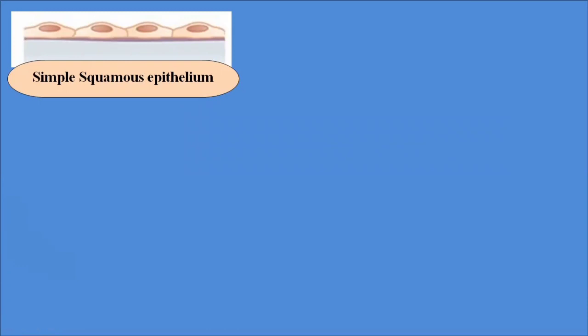Simple squamous epithelium lines different organs of the human body. It provides the lining to the heart, where it is known as endocardium, and also lines the blood vessels and lymph vessels, where it is known as endothelium. It also lines the alveoli of the lungs and the collecting ducts of nephrons in the kidneys. These cells fit closely together forming a very thin layer across which diffusion can easily take place.